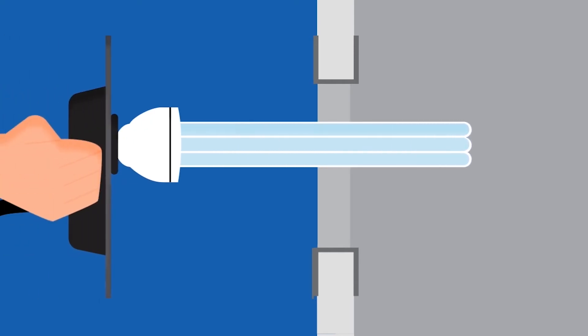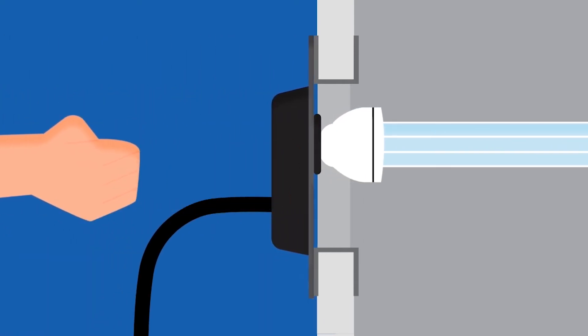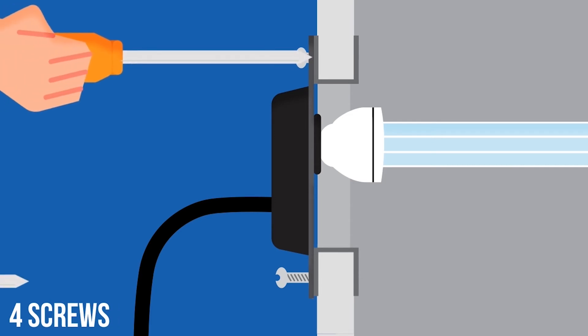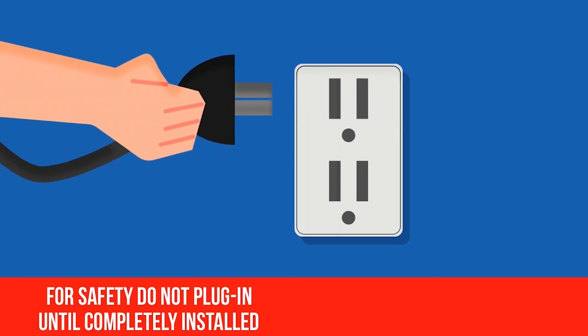Insert the UVC MAXX25 and align the holes with the mounting plate. Place the screws in the holes and use a screwdriver to secure the UVC MAXX25. Then plug it in.